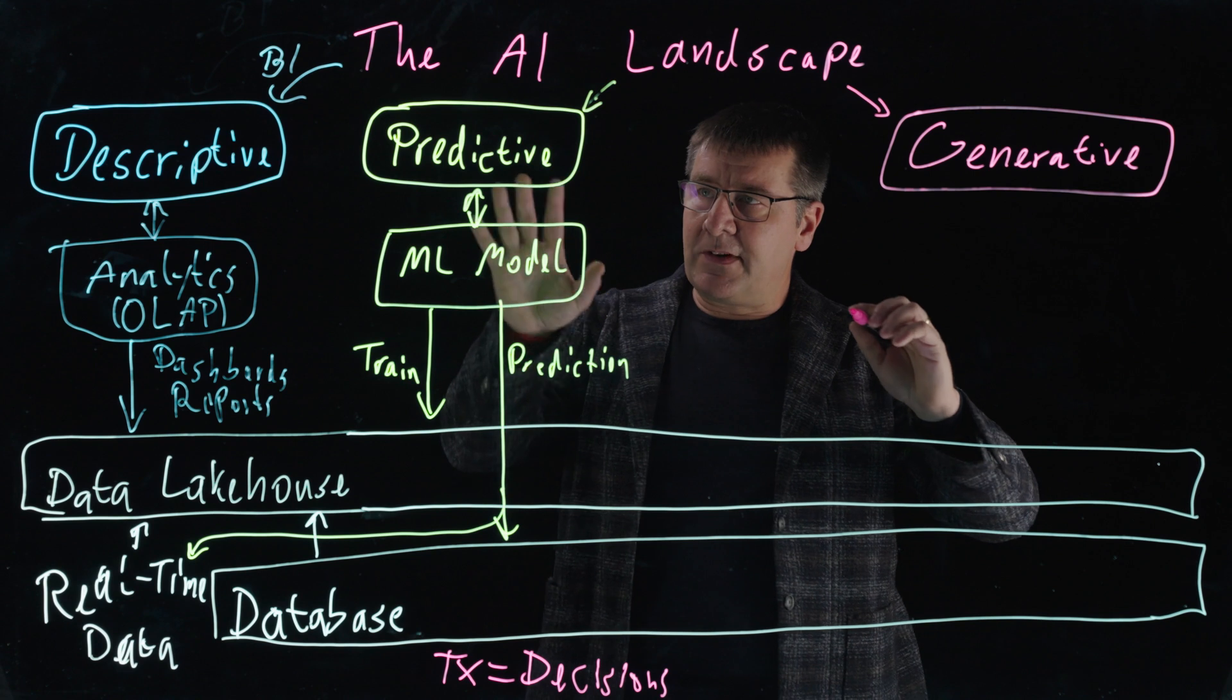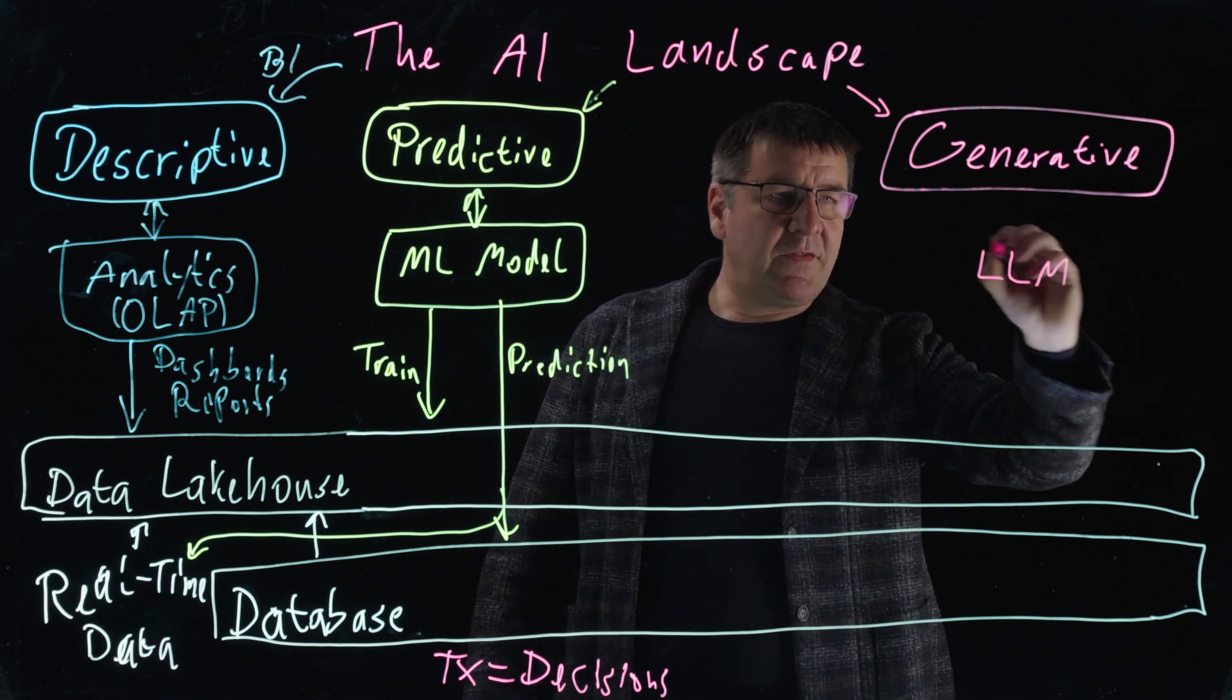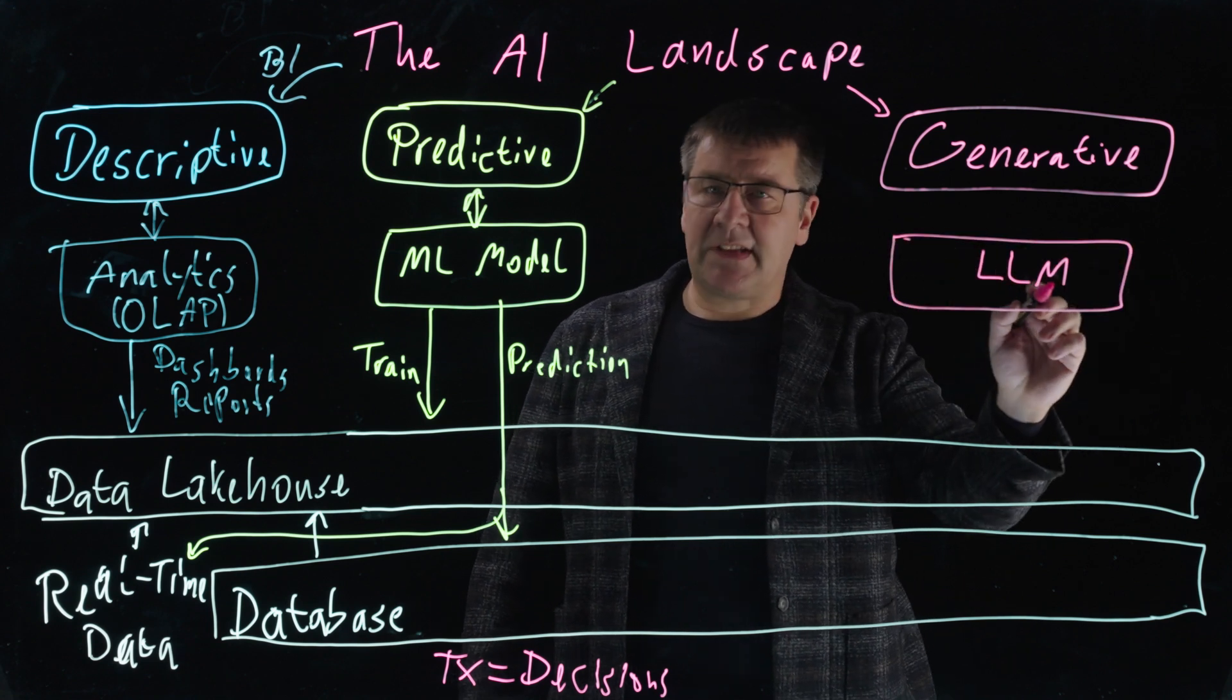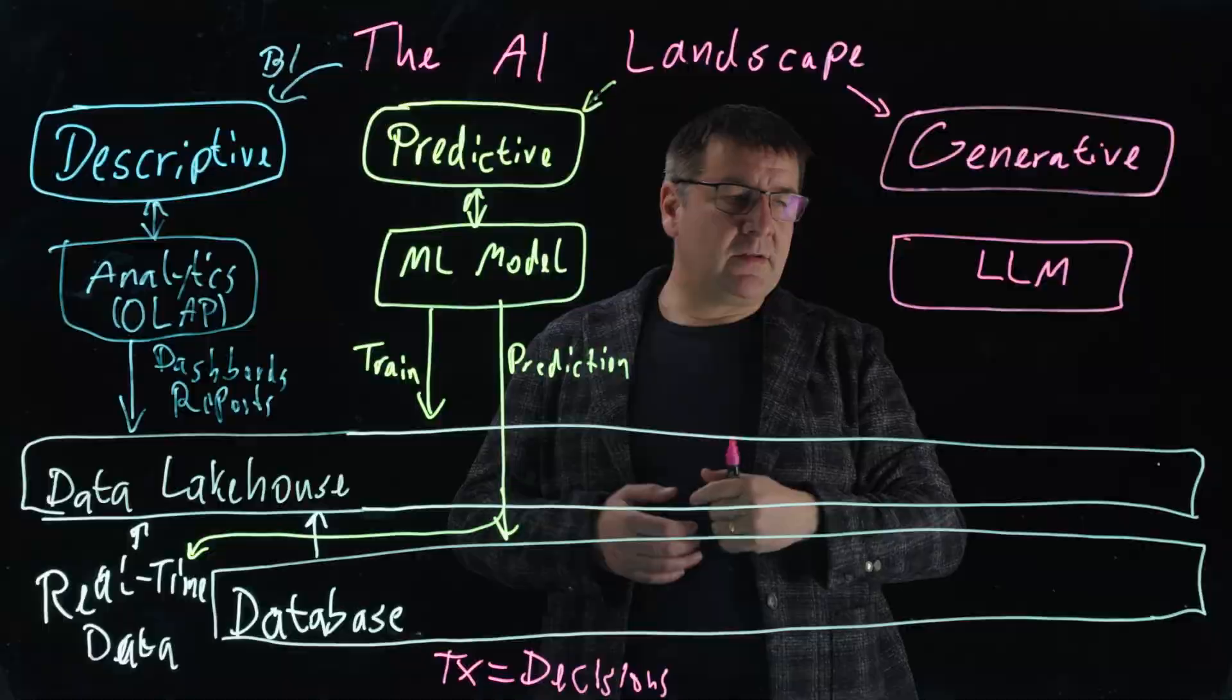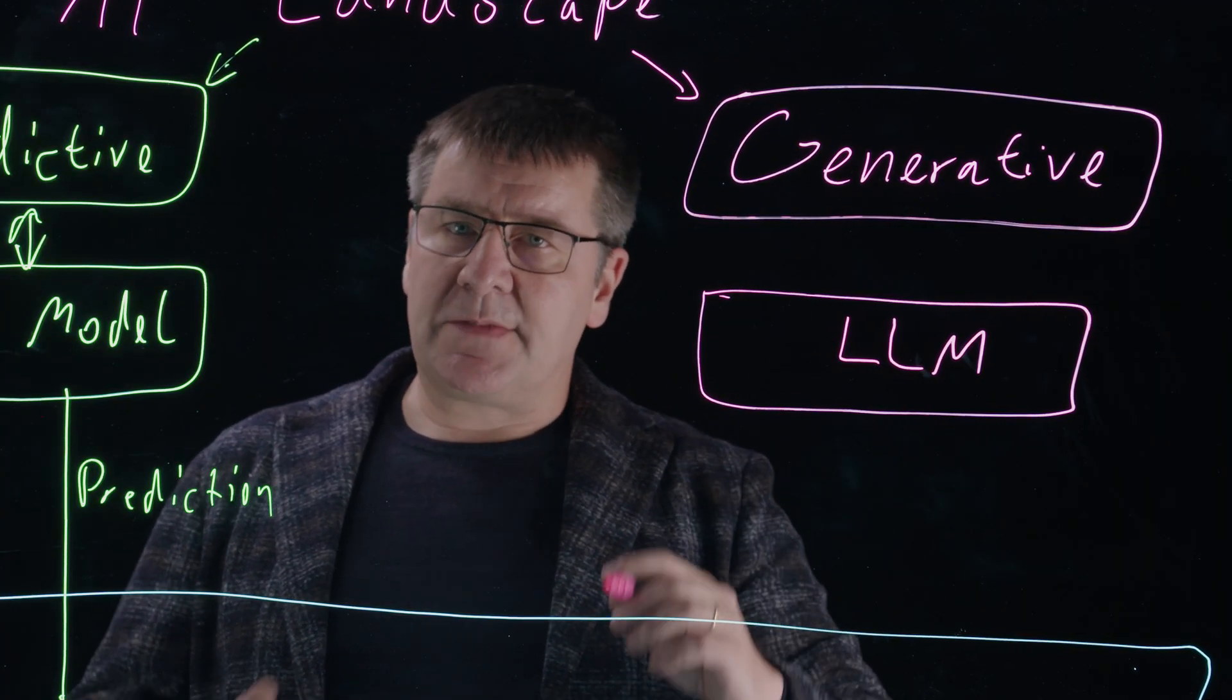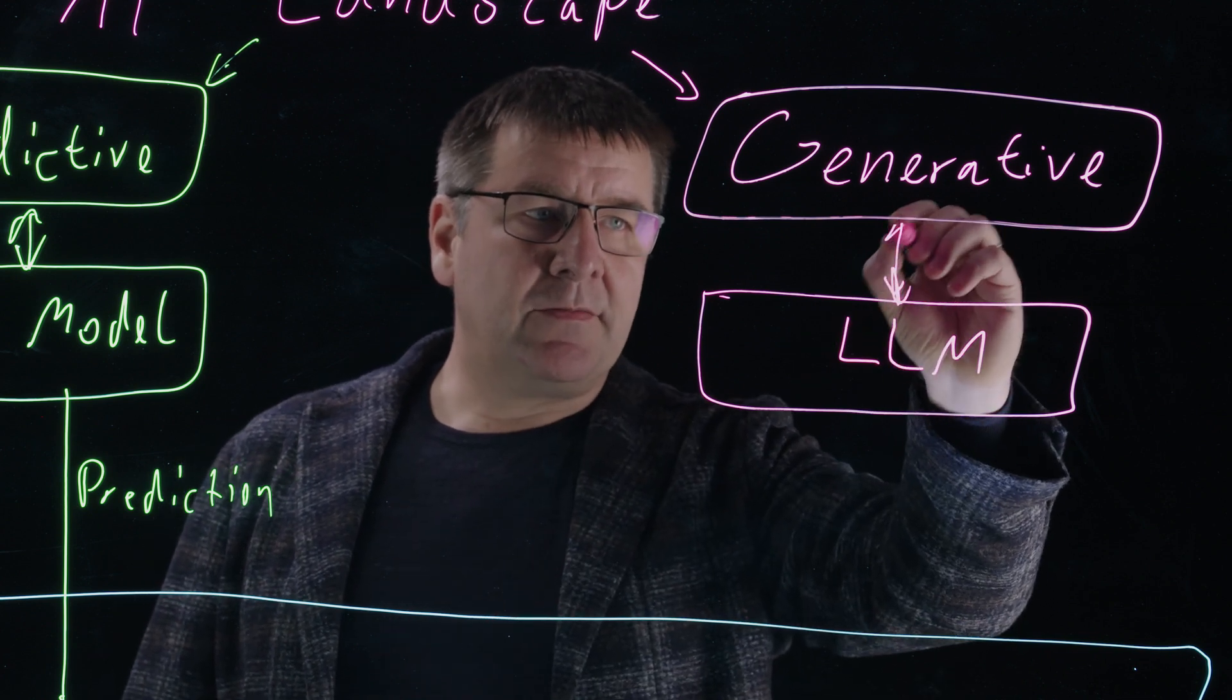Because also, similar to the predictive side, you have models here. But these are typically specific types of models. You may have heard this term LLM. M stands for model. And it's a large language model, which means it's models that are trained on large volumes of data. More generally speaking, you may have also heard the term foundation model here. LLM is a specific type of foundation model, specifically for text data, for language data.